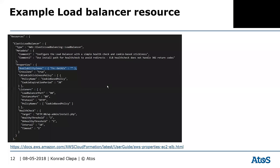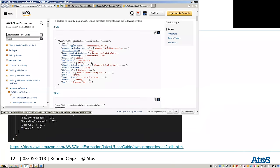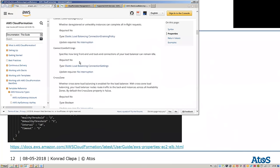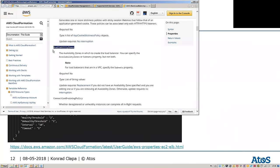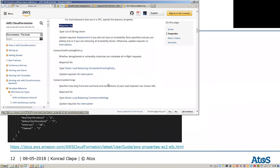You can create a lot of resources — many services are supported. For example, here's an Elastic Load Balancer: you can define all the parameters you need for this particular resource to be deployed. In the docs you can see all the properties for Elastic Load Balancer, with examples showing whether something is required. For instance, Availability Zone is not a required parameter, but some parameters might be required.